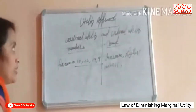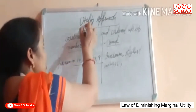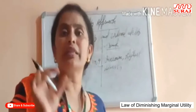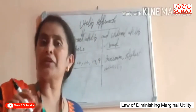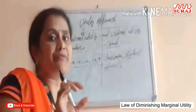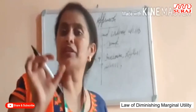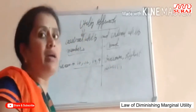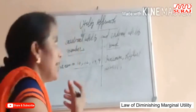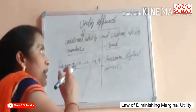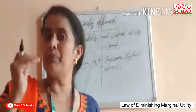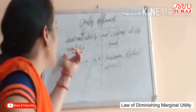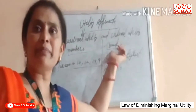The utility approach is related to the cardinal approach — when we evaluate the utility approach, we include numbers, meaning consumption can be measured in terms of numbers. But in real life, satisfaction cannot be measured in terms of numbers. So the ordinal utility is related to the indifference approach. The main difference between cardinal and ordinal utility: cardinal is measured in numbers, ordinal is measured in rank.